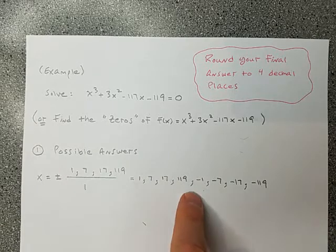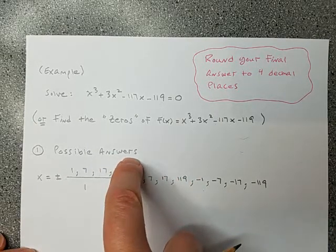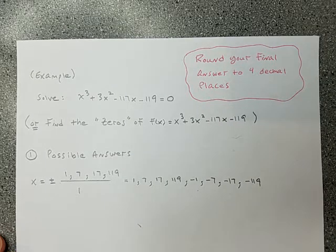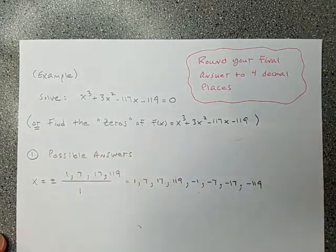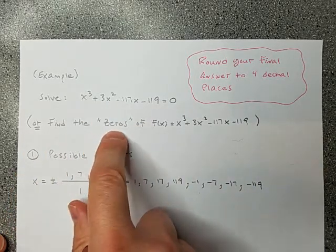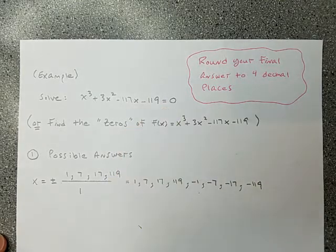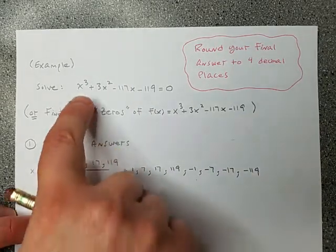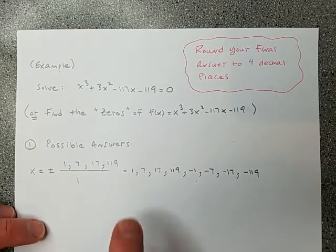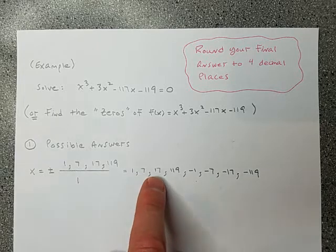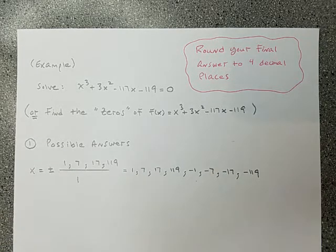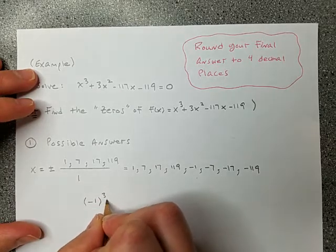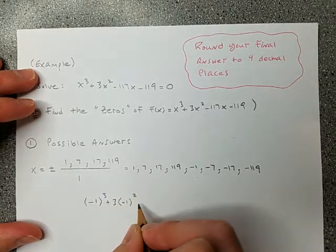You would just check them — the way you'd know whether they're an answer is if you plug the number into the equation it gives you zero. Alternatively, if the question says find the zeros of the function, you take the function and set it equal to zero. We have to figure out which one of these works, so I'll plug them in one at a time until I find the one that works: plug in 1, if that doesn't work try 7, then 17, and so on. The number I think will work is negative 1.